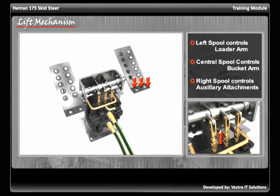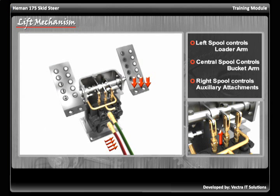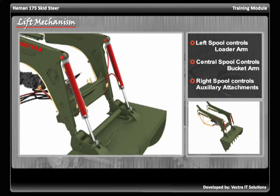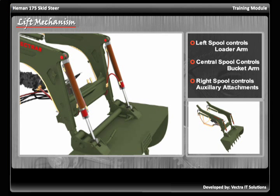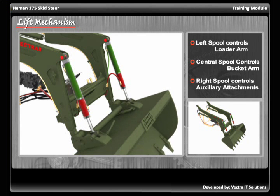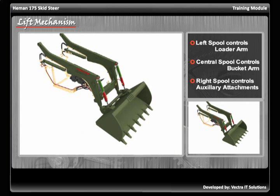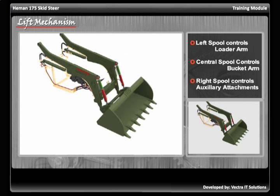Pushing the foot pedal by the ankle of the operator reverses the entire mechanism. The spool gets pulled up, and the lower port becomes the escape route for the pressurized oil. The pistons of the cylinders are pulled in the opposite direction, which collapses back the extension rods of the cylinders and brings the bucket back to its original position.